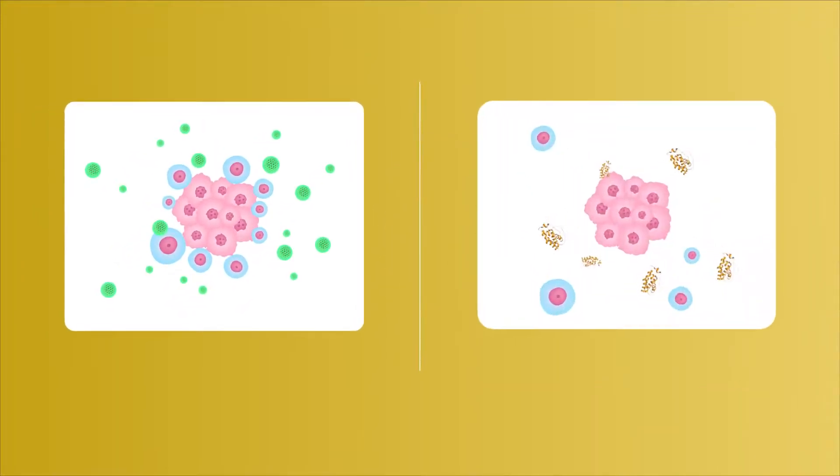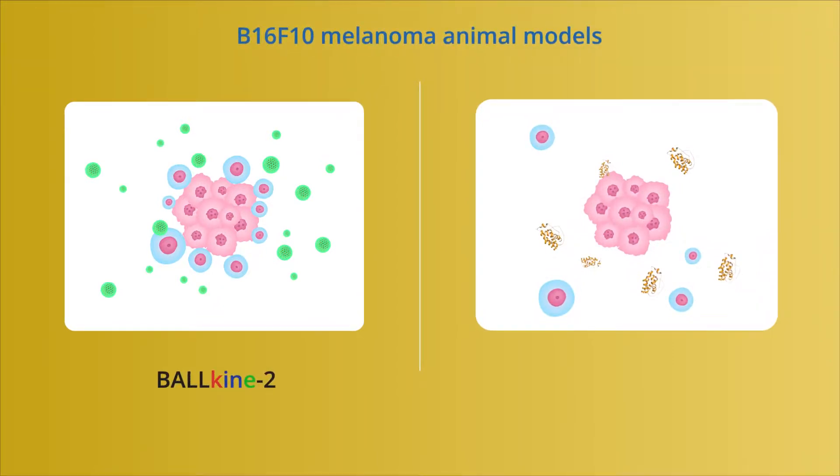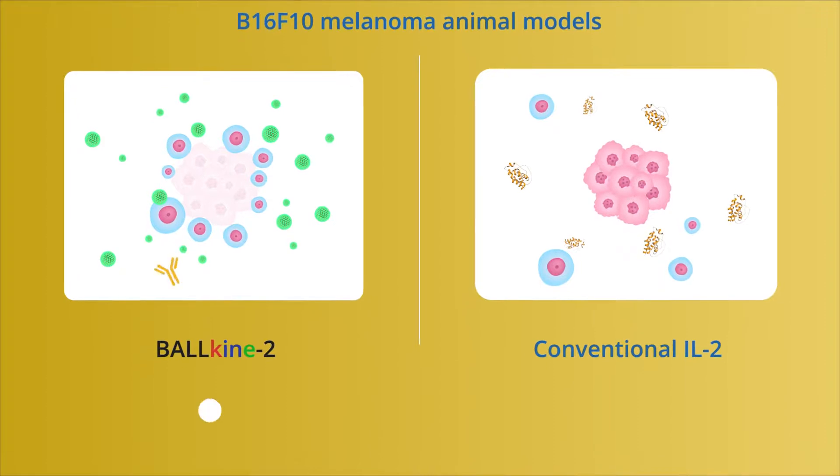Additionally, peritumorally injected BALLkine-2 more efficiently reduced tumorigenesis and metastasis than conventional systemic IL-2 administration, showing greater synergy with anti-PD-1 antibody in B16F10 melanoma animal models.